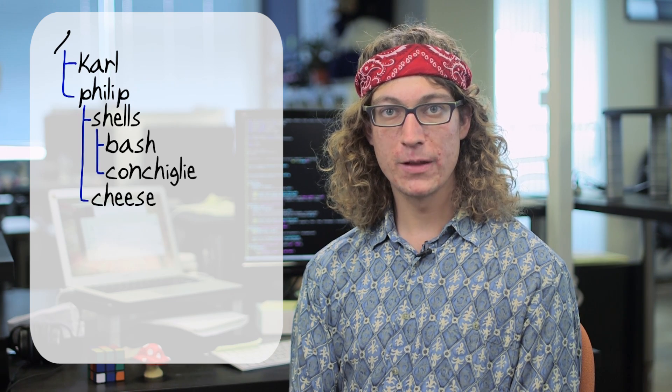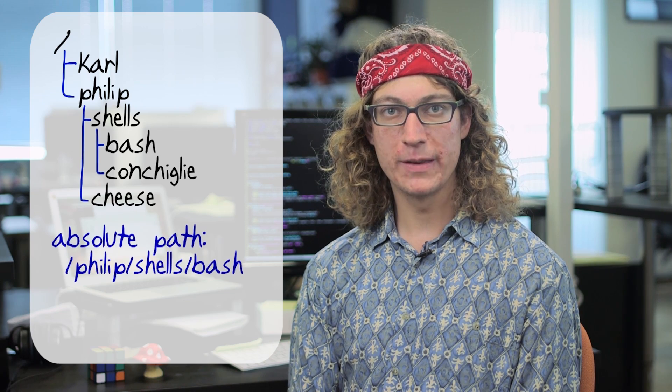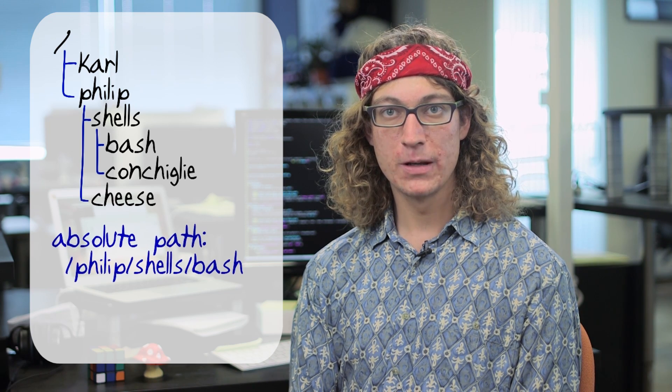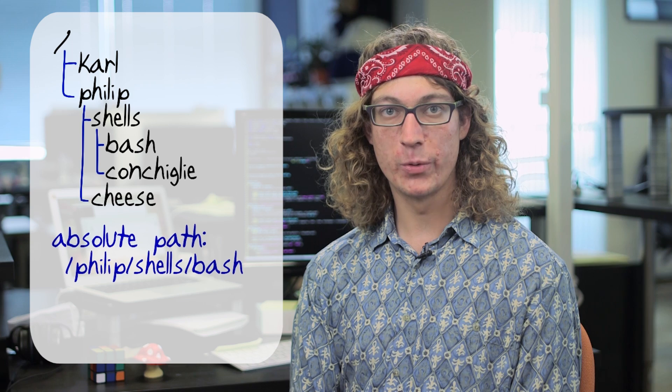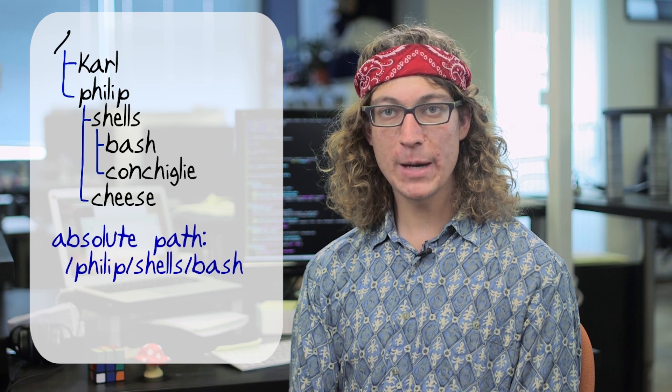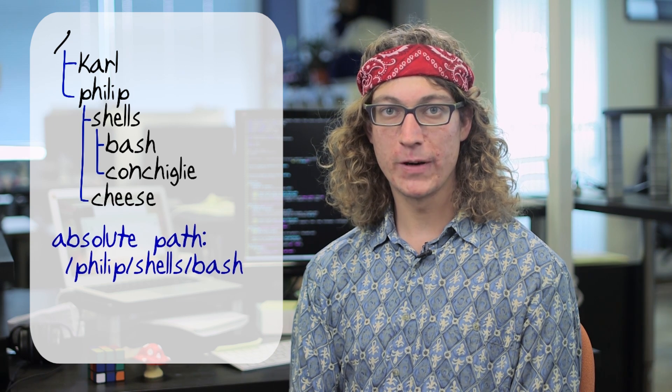The topmost directory in the file system is the root directory, and we denote the root directory with a slash. You can describe the location of any file or directory in the file system with a full path beginning with a slash. The full path is called the absolute path, and that means it tells every step that has to be taken from the root, or the absolute beginning of the file system.